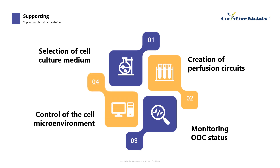The last aspect is monitoring OOC status. Various readout options and controls are necessary to monitor OOC status during cultivation and experiments. The most common method involves visually examining the OOC under a microscope, regularly checking for normal cell or tissue appearances, and identifying any abnormalities that could lead to equipment failure.